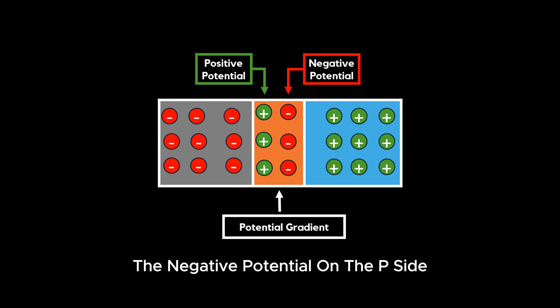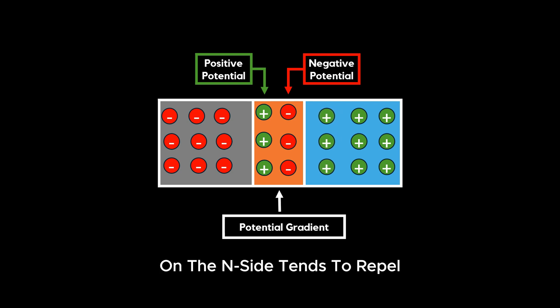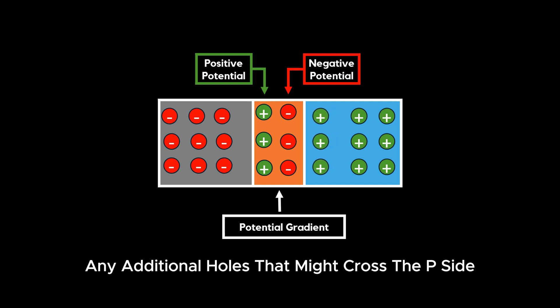The negative potential on the P-side tends to repel additional electrons that try to cross the junction from the N-side, and the positive potential on the N-side tends to repel any additional holes that might cross from the P-side.